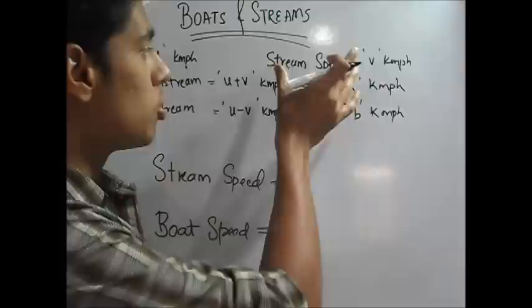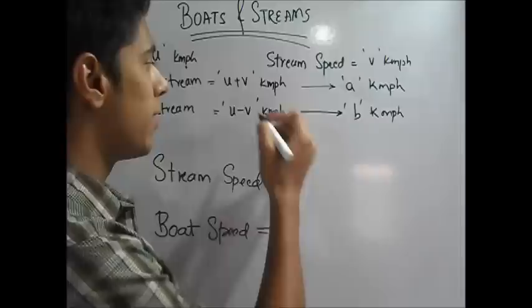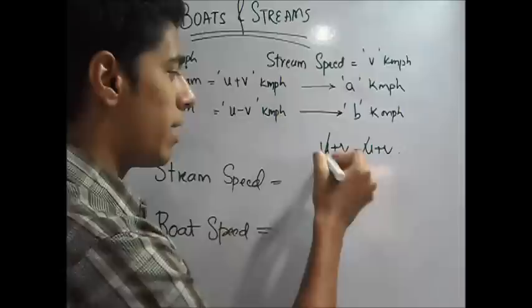In some problems, what they give you is that the downstream and the upstream speeds are given, and you have to find your stream speed or your boat speed. This step will help you do that. Let us see what is a minus b. a minus b will give you u plus v minus u minus v. So minus u minus v gets cancelled.